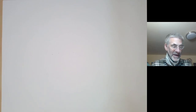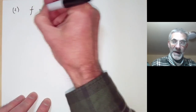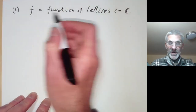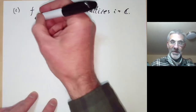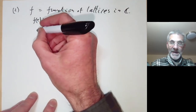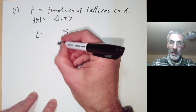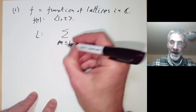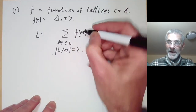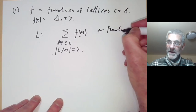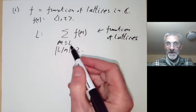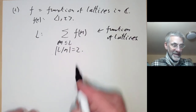The second way of introducing the Hecke operator is to think of f as a function of lattices in ℂ, where the function is homogeneous of degree zero. Recall f(τ) corresponds to a function of the lattice generated by 1 and τ. Given a lattice L, we can sum over all sublattices M contained in L such that L/M has order two, and take f of each sublattice. This gives a way of going from a function of lattices to another function of lattices by summing over sublattices of a given index.